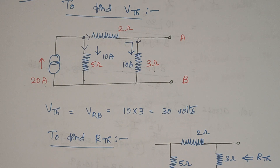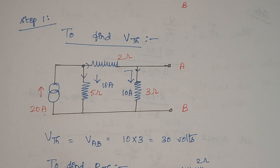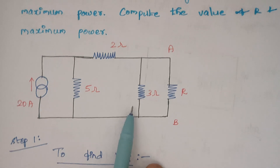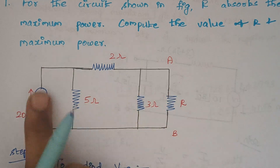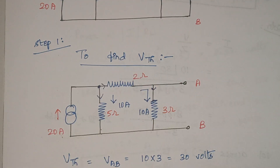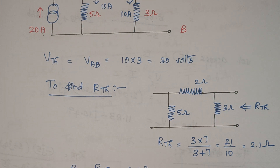The next thing is we have to find R_Thevenin, that is Thevenin's resistance. So what is the procedure? Again, we have to remove the load resistance as well as we have to remove the current source from the main circuit. So in this problem we have to remove this resistance as well as this current source. The rest forms the circuit to calculate Thevenin's resistance.